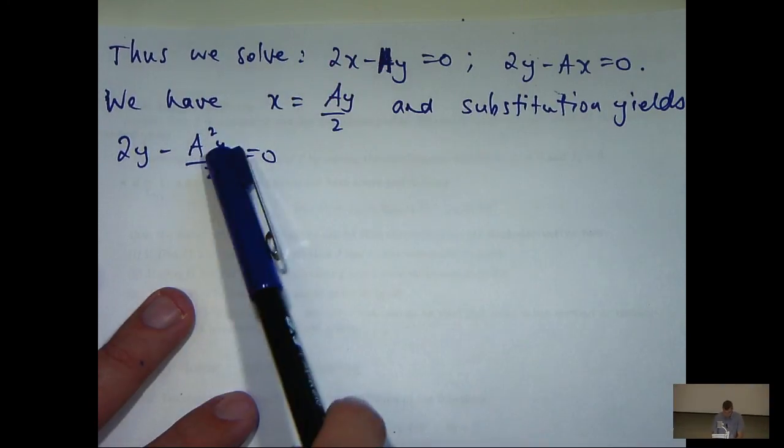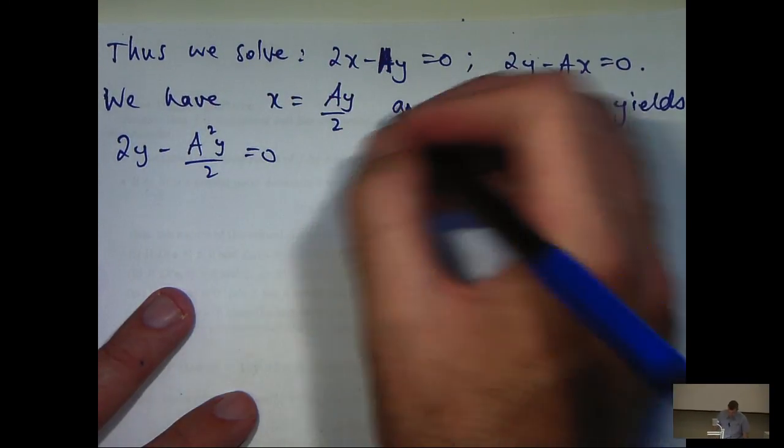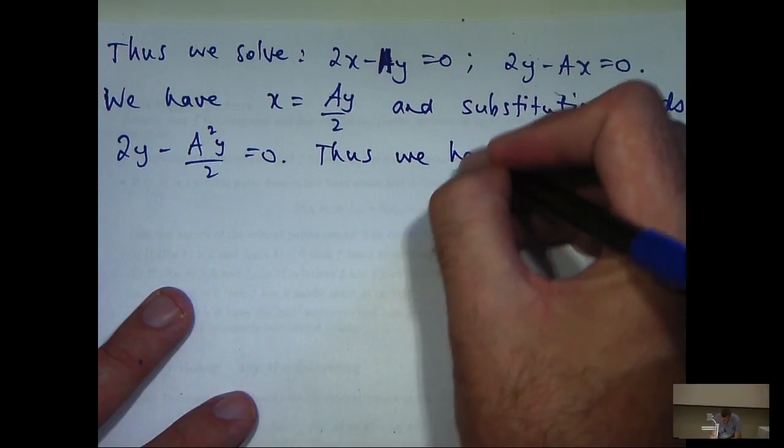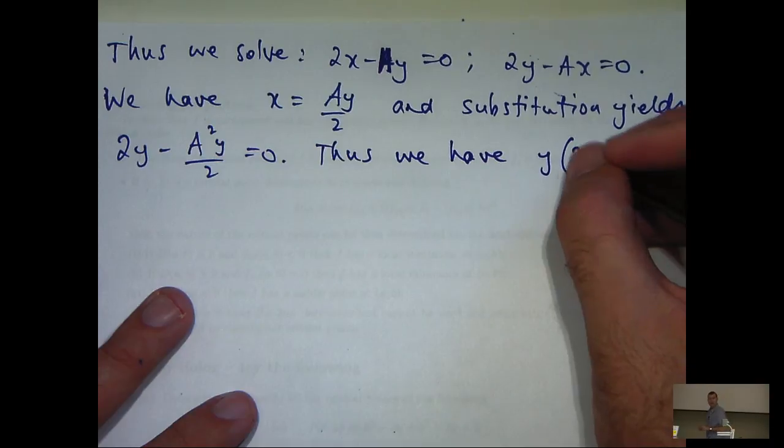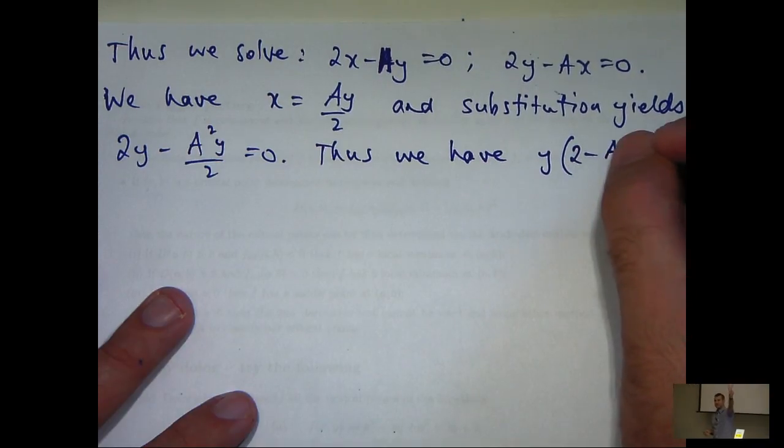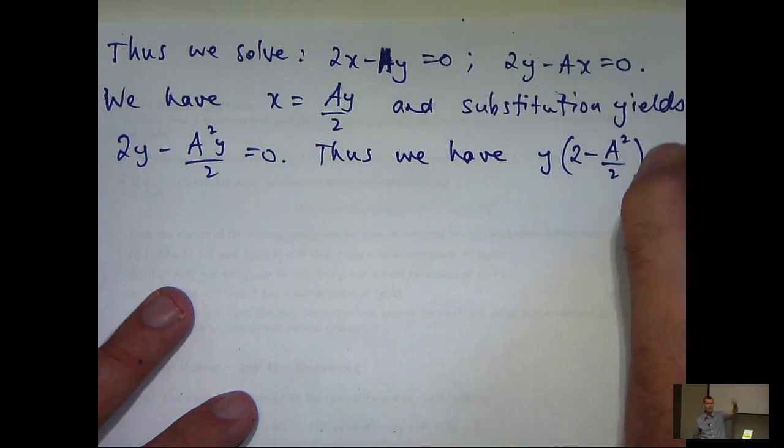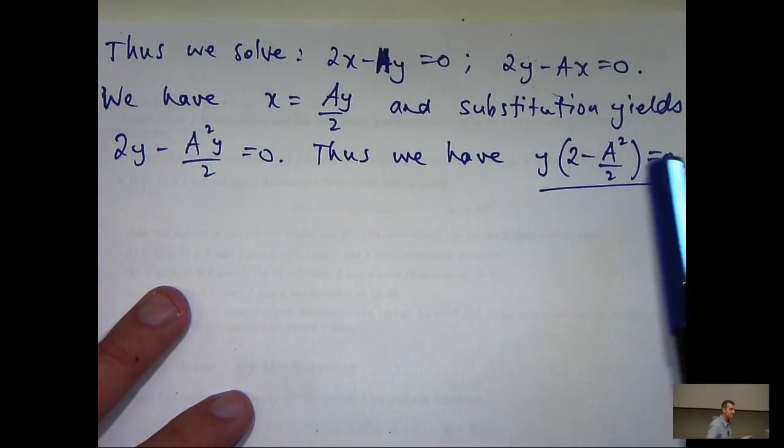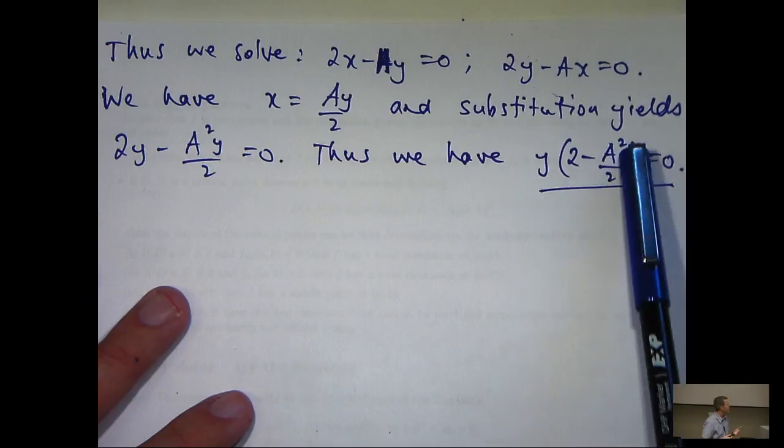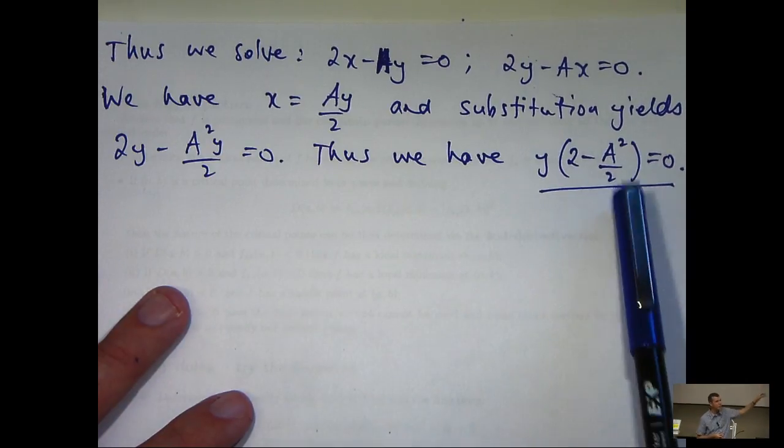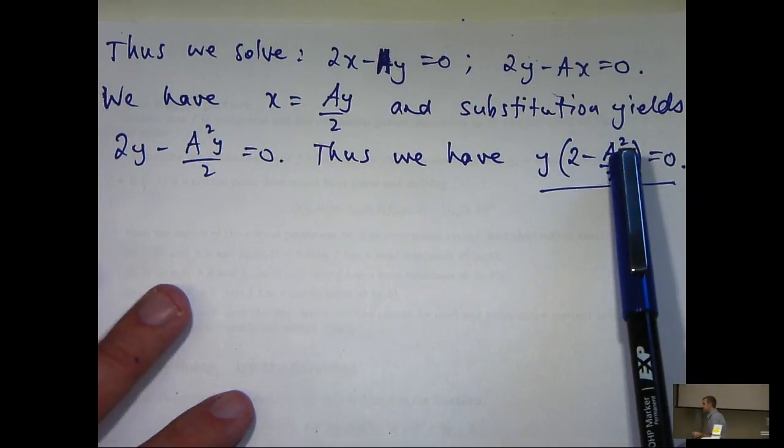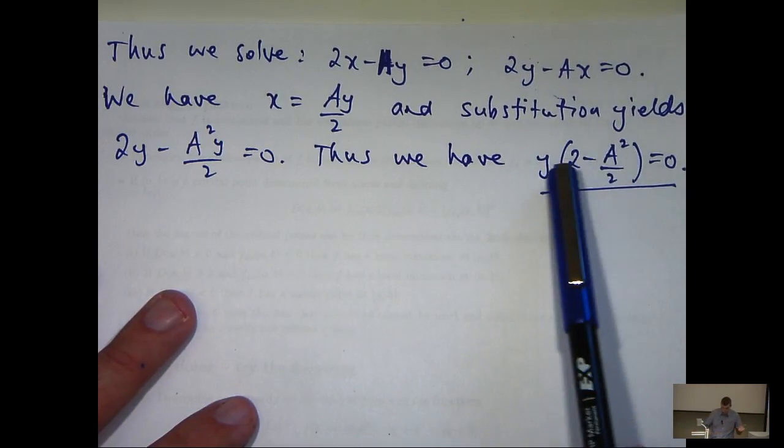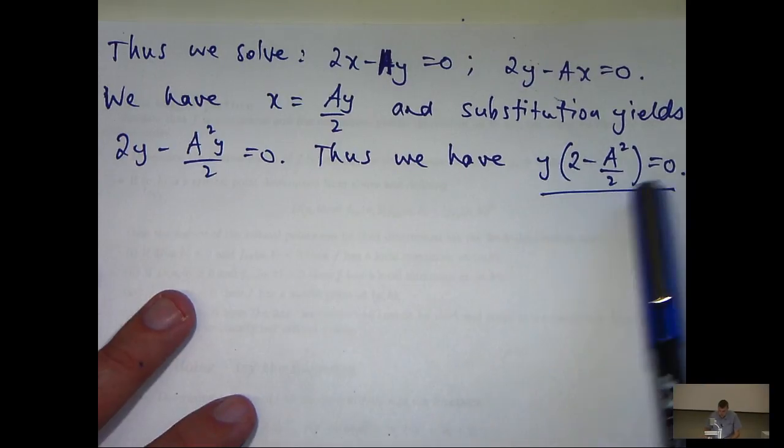So, just rearranging the first equation and substituting in here for x, substitution will give us the following. So, I can take out a factor of y. Okay, so let's consider this equation here. Firstly, either y is 0 or this expression in brackets is 0. Now, we've made the assumption here that a is positive and not equal to 2, so actually this can never be 0. The only other alternative is that y equals 0.